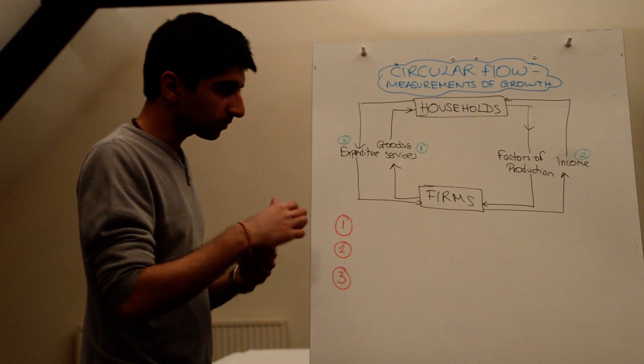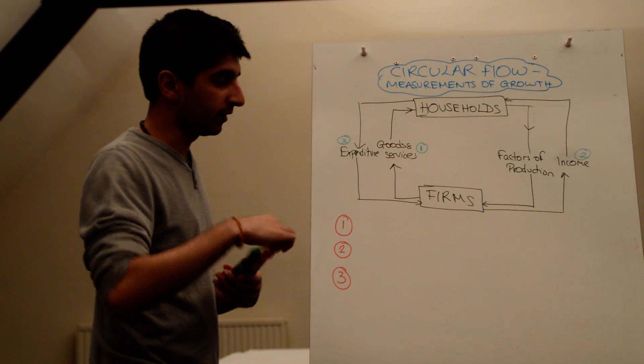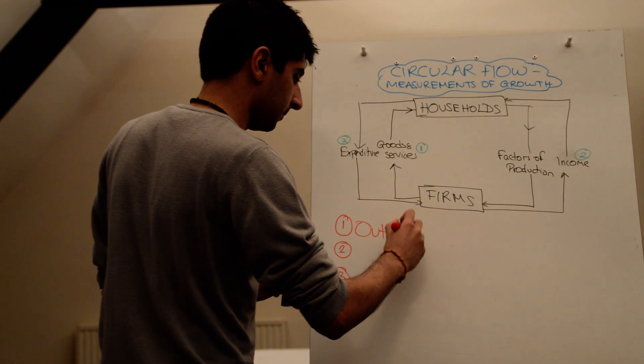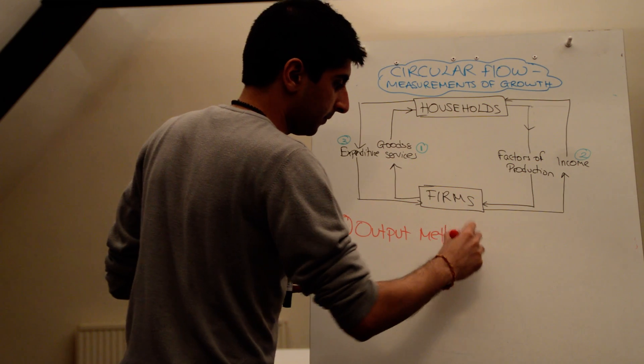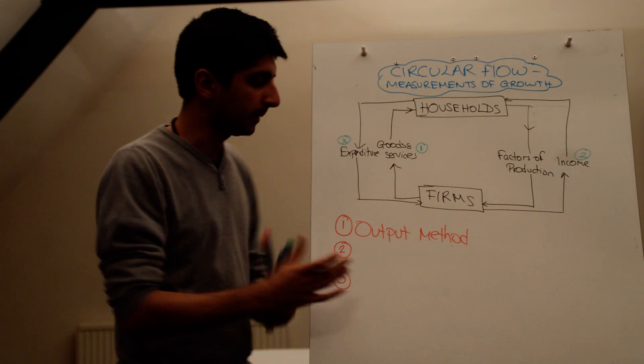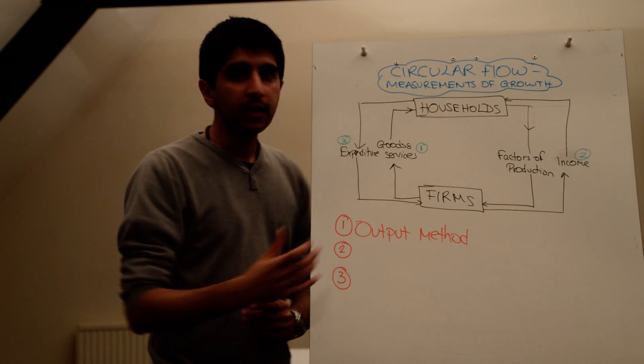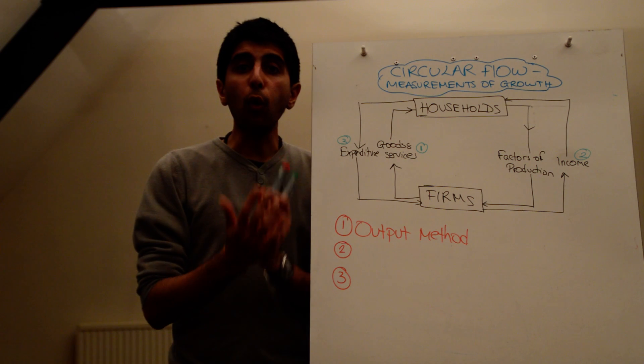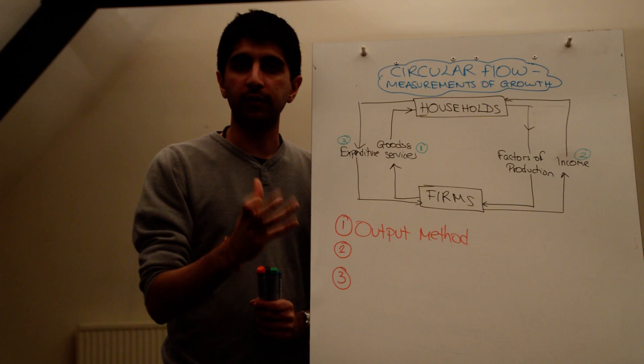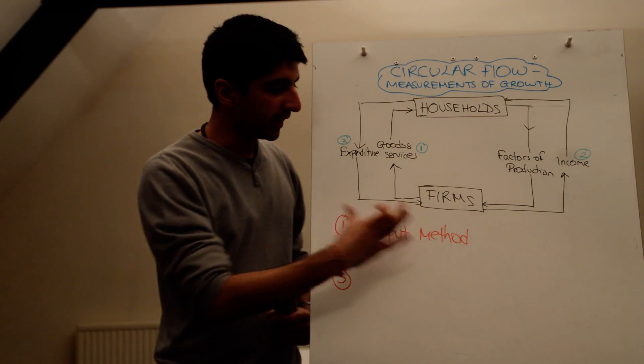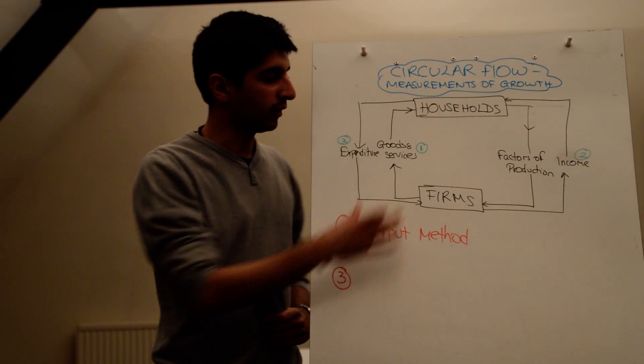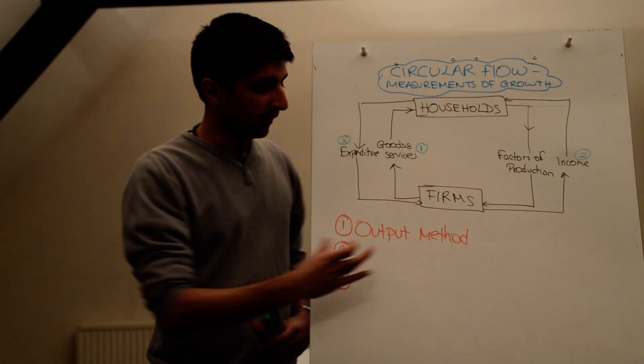Let's have a look. Number one, measuring the value of goods and services, which is known as the output method. This is the output method of measuring growth, measuring GDP. So what this does is it works out all the goods and services produced in the economy. The value of those goods and services is then added up. And that gives you an idea of the value of these goods and services. It gives you an idea of this part of the flow. And that's known as the output method.